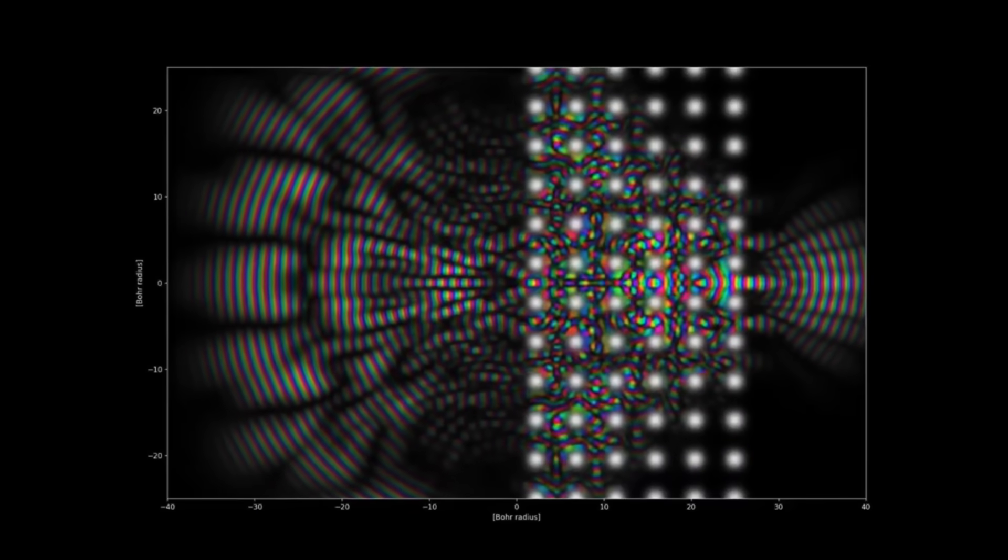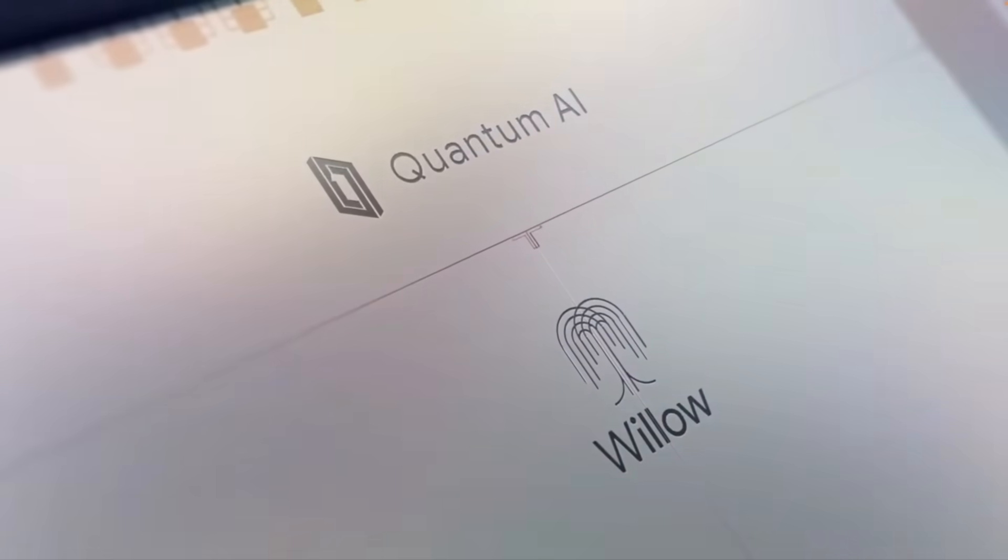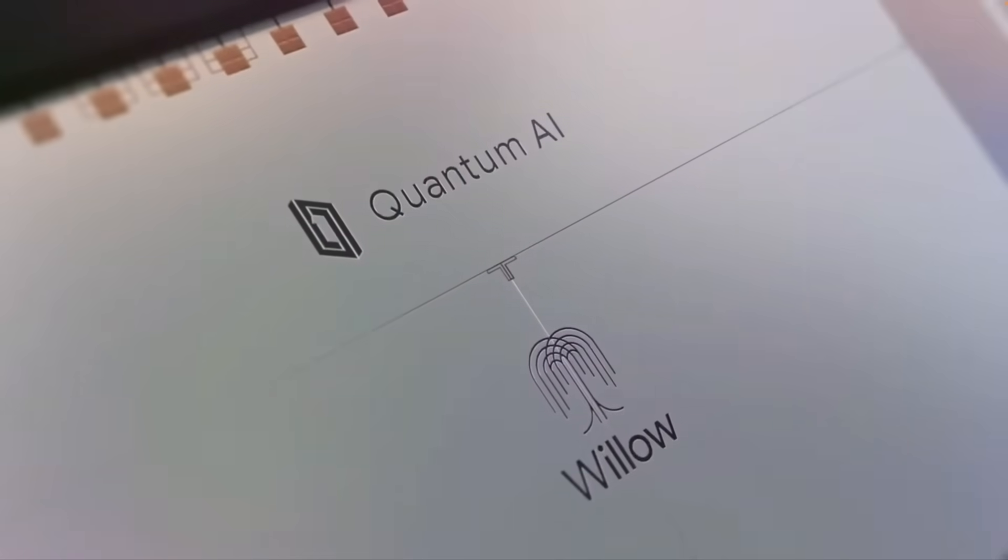To understand what's at stake, we need to unpack what Omega Code actually means. The term has three distinct faces, each with its own implications for our future.